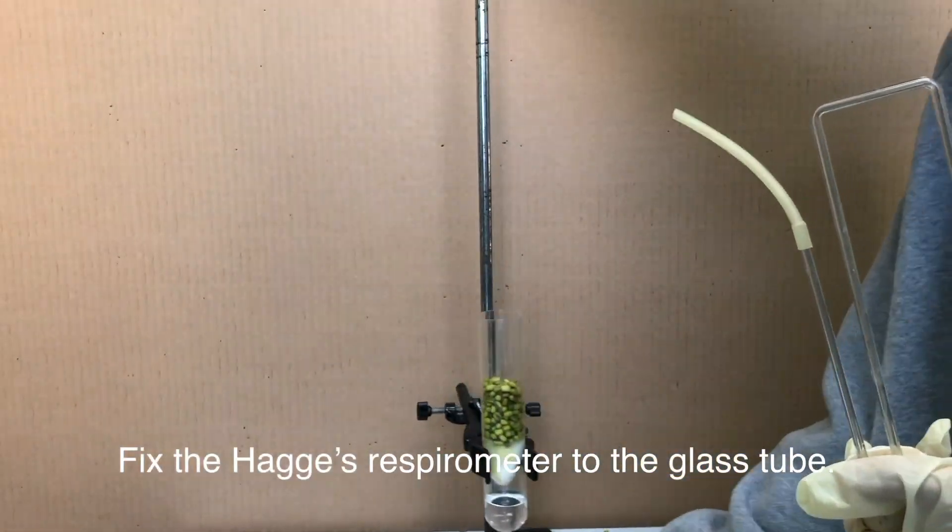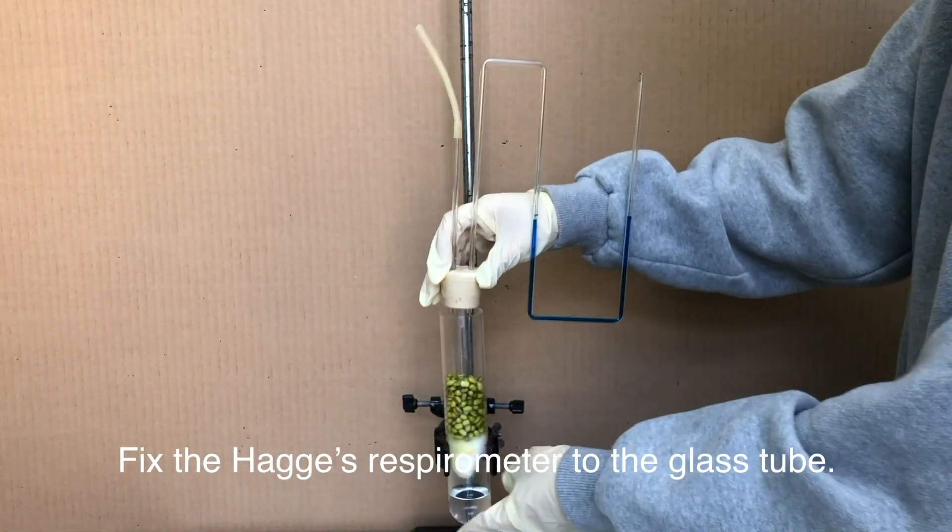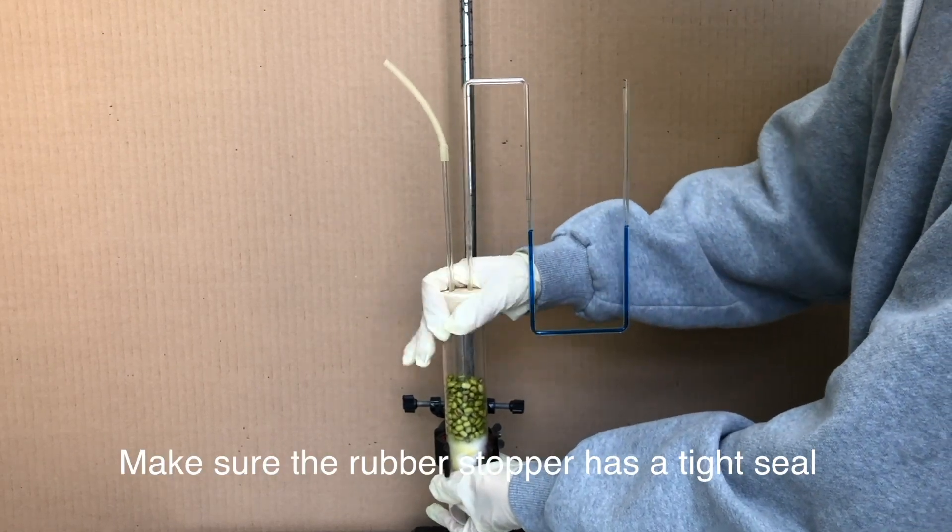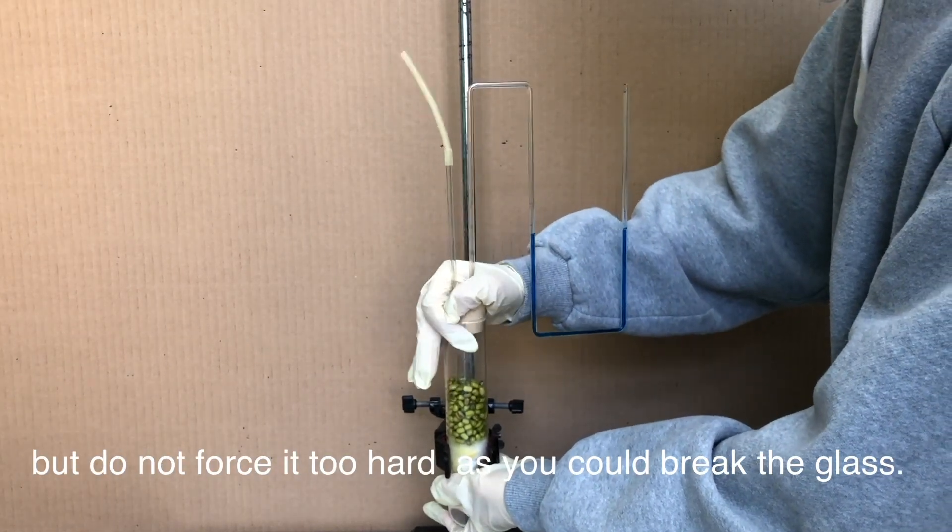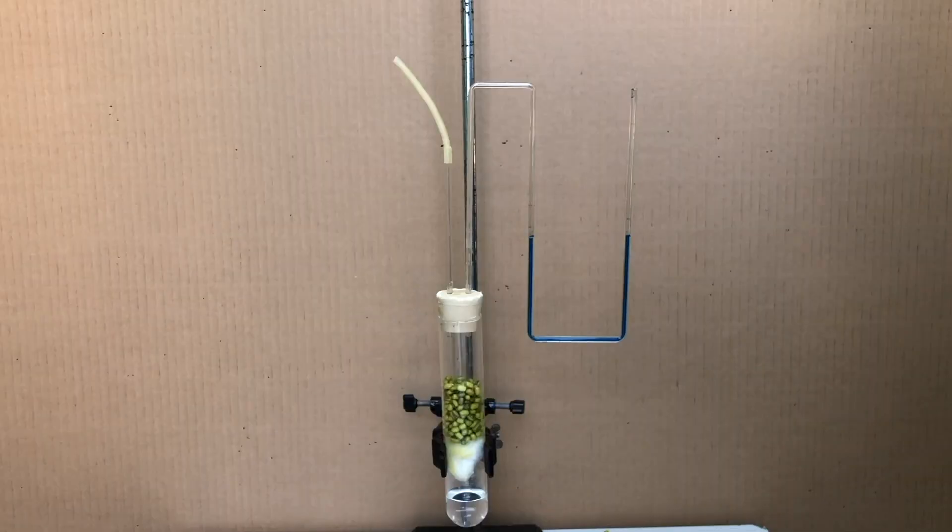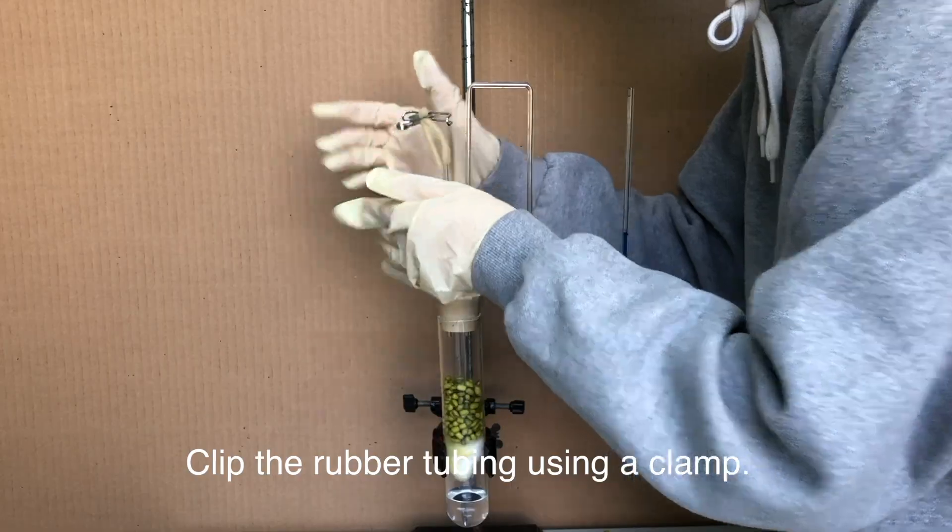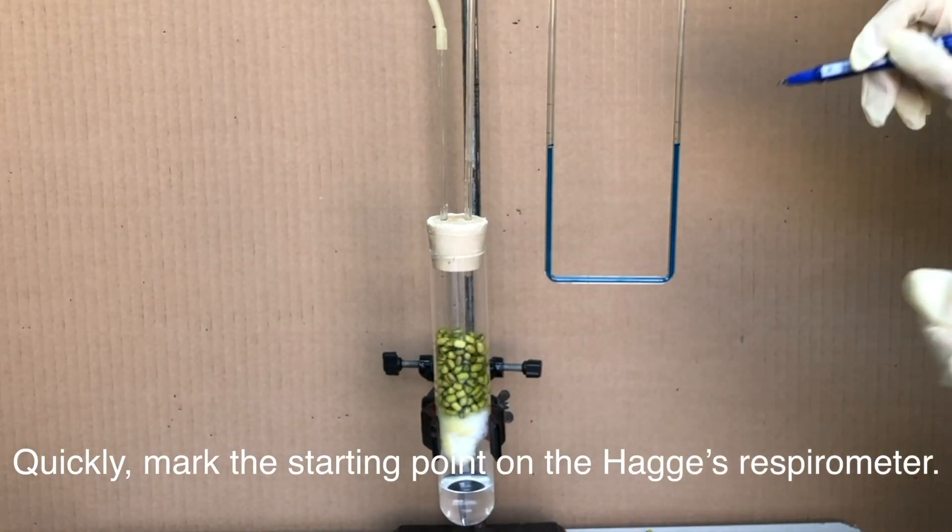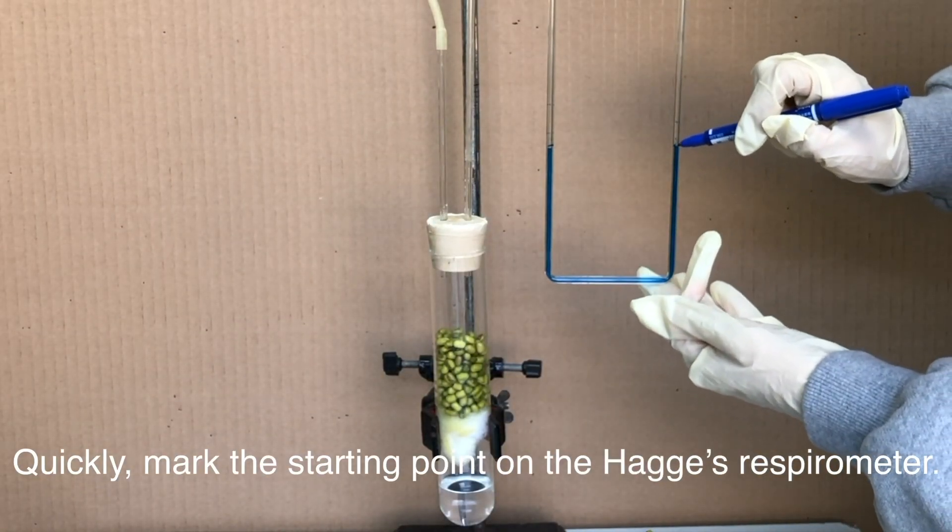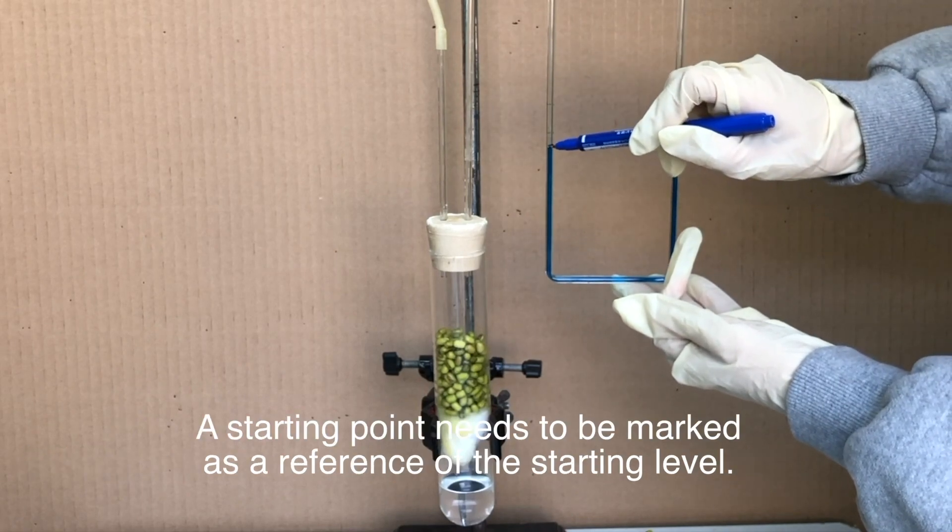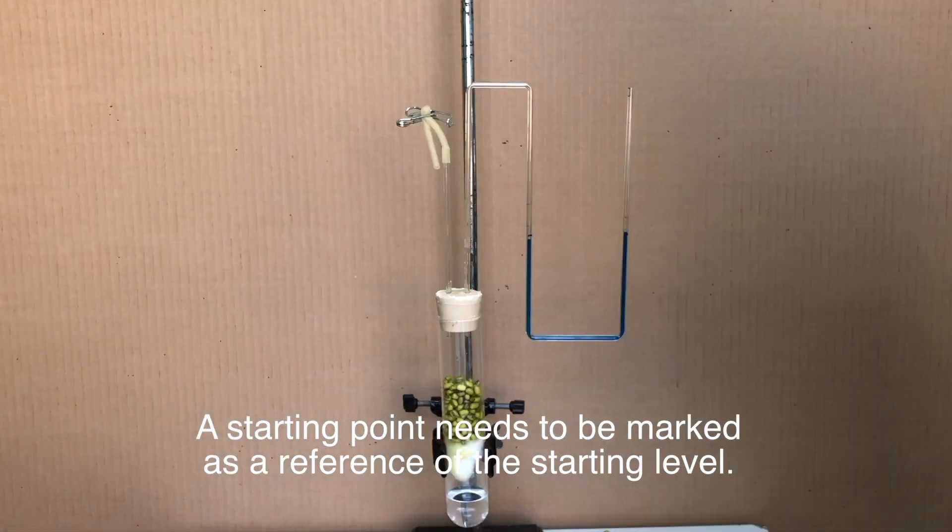Fix the Hagi respirometer to the glass tube. Make sure the rubber stopper has a tight seal, but do not force it too hard as you could break the glass. Clip the rubber tubing using a clamp. Quickly, mark the starting point on the Hagi respirometer. A starting point needs to be marked as a reference of the starting level.